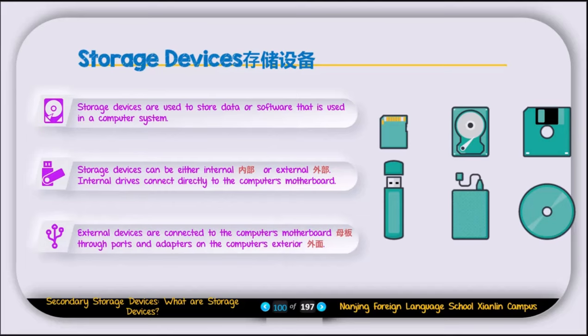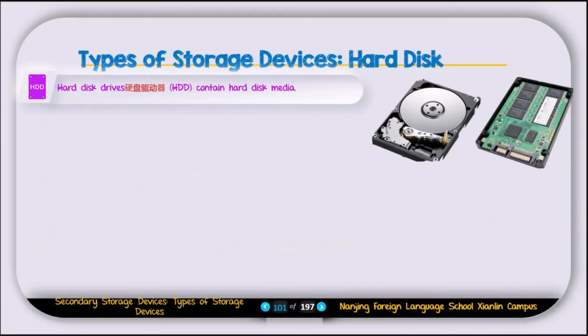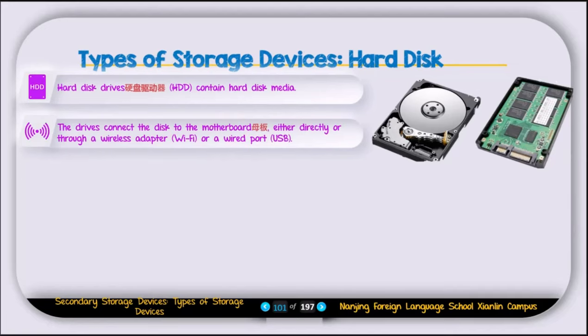External devices are connected through ports and adapters on the computer's exterior. Hard disk drives (HDD) contain hard disk media and can connect to the motherboard directly, through a USB port, or wirelessly via Wi-Fi, allowing you to store or read data remotely. Solid state drives (SSD), also known as flash drives, have flash memory media and are otherwise similar to hard disks.